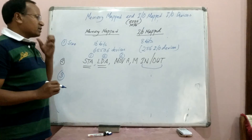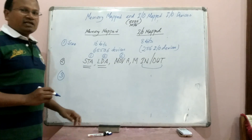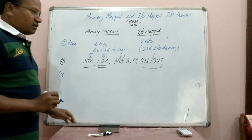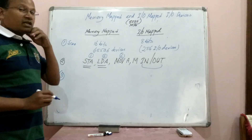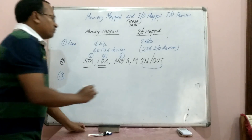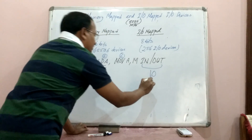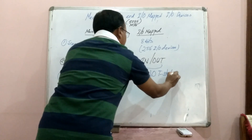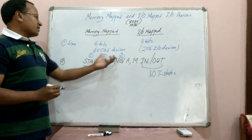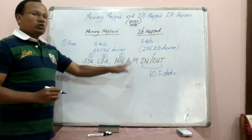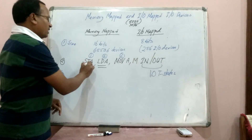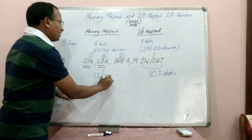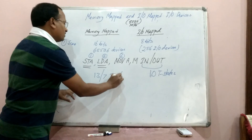The third point: T states. For IN and OUT instructions, there are 3 machine cycles each, and therefore 10 T states in total. In case of memory-mapped IO, MOV M,A has 7 T states, whereas instructions like LDA and STA have 13 T states. So, either 13 or 7 T states are required.